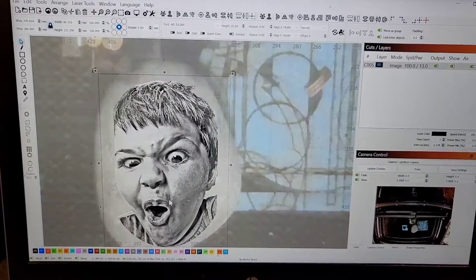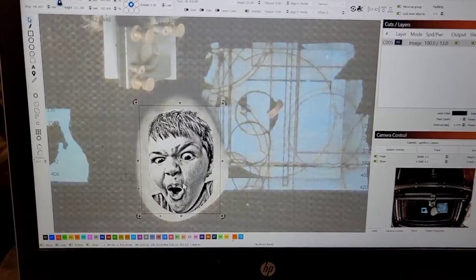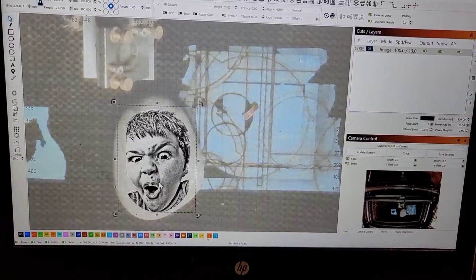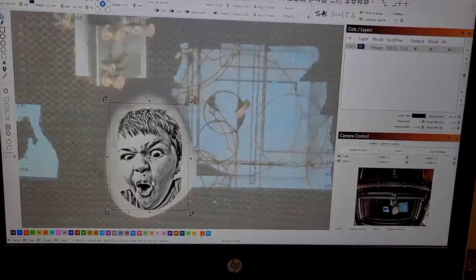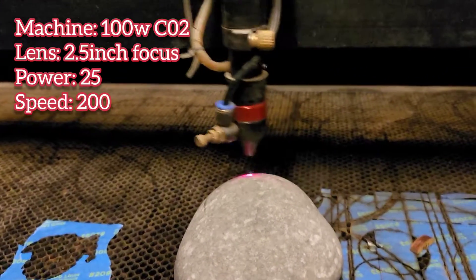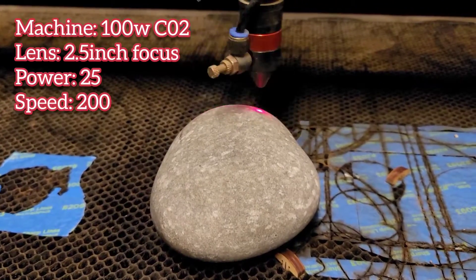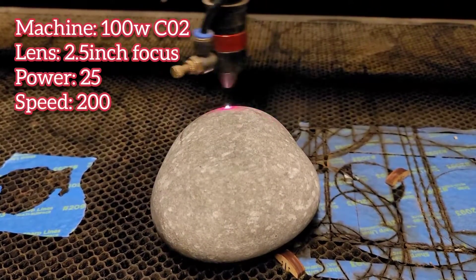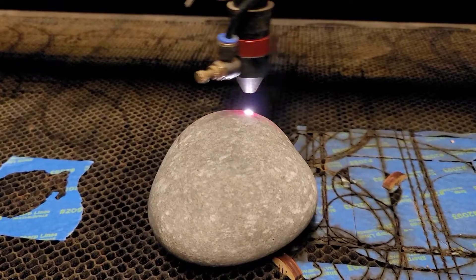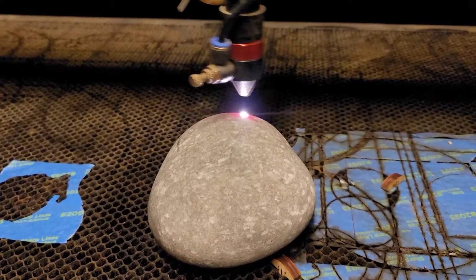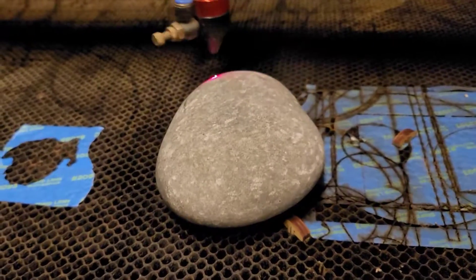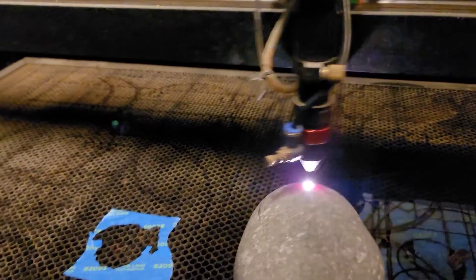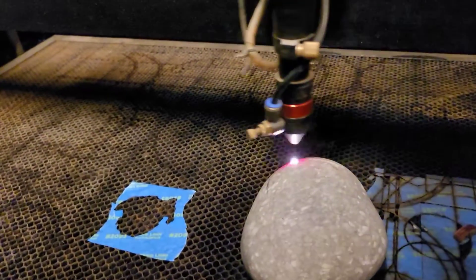There we have it, he's on the rock. I'm going to get everything cut on and we're going to start this bad boy. We're letting this thing run right now. We're using a 100 watt CO2, I'm running 25 power and 200 speed and we're going to let this thing play out and see what it looks like.